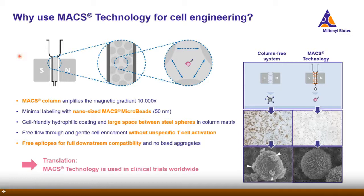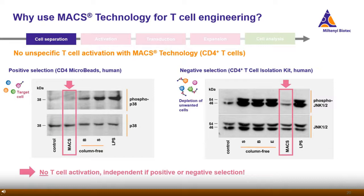Why is it so beneficial to use MACS technology for immune cell manufacturing? Our technology is based on MACS columns. Through the columns, the magnetic field is amplified 10,000-fold. This allows us to reduce the number of beads for enrichment and leads to minimal labeling of the cells. Further, there is a large space between the steel spheres of the column matrix that enables a free flow-through of non-labeled cells and enrichment of minimally labeled cells without unspecific cell activation.